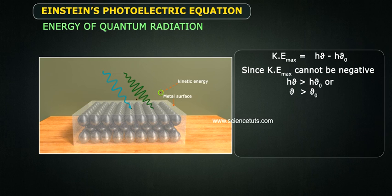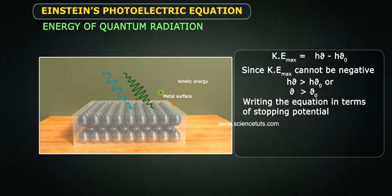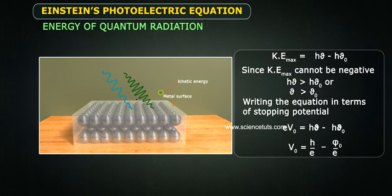hν ≥ hν₀. Writing the equation in terms of stopping potential, eV₀ equals to hν minus hν₀. V₀ equals to h/e times ν minus φ₀/e.